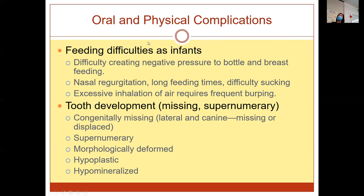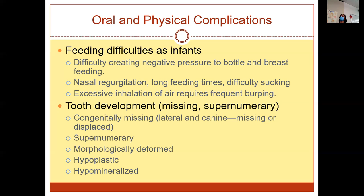Some of the oral and physical complications: feeding difficulty would be straight out the gate — difficulty creating negative pressure for sucking on a bottle or breast. Then there's nasal regurgitation, where food comes back up into the nasal cavity. They'll just have difficulty sucking to begin with, won't get as much food, may take in more air, have more upset tummies, and need to be burped more often. Regarding tooth development, they may have congenitally missing teeth — a lateral or canine would be most common simply because of where the clefts are located.